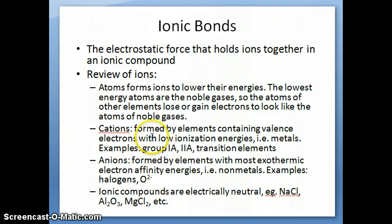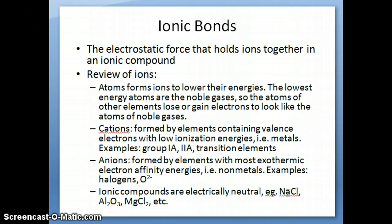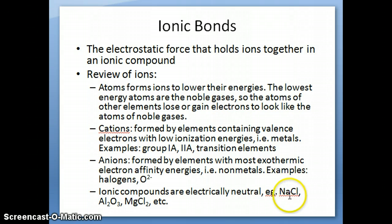Once the cations and anions form, they have positive and negative charges and can be attracted to each other. That's an electrostatic attraction between charges, and they form electrically neutral compounds — what we call ionic compounds. Sodium has a charge of +1 and chloride has a charge of −1; they combine to form NaCl in a one-to-one ratio because the charges are +1 and −1.